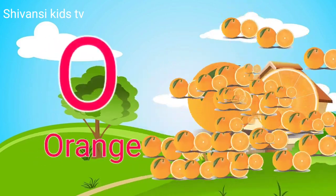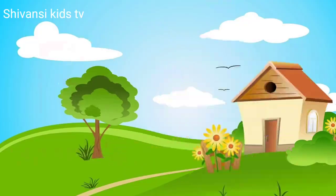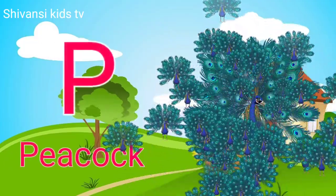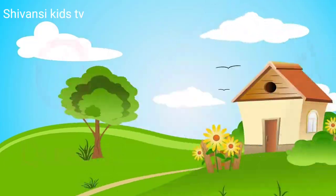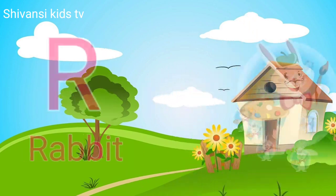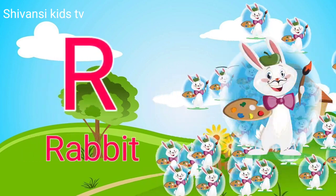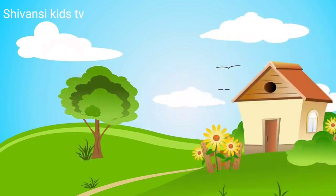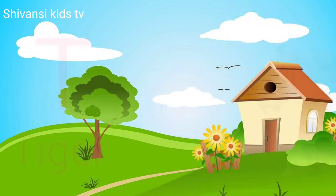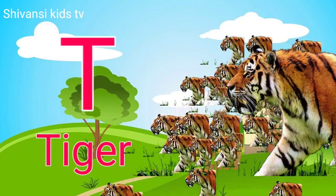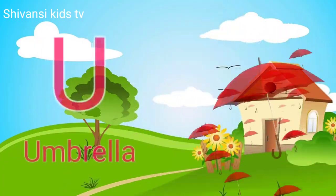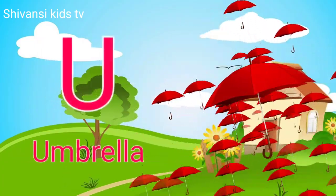O for orange, P for peacock, Q for queen, R for rabbit, S for sheep, T for tiger, U for umbrella.